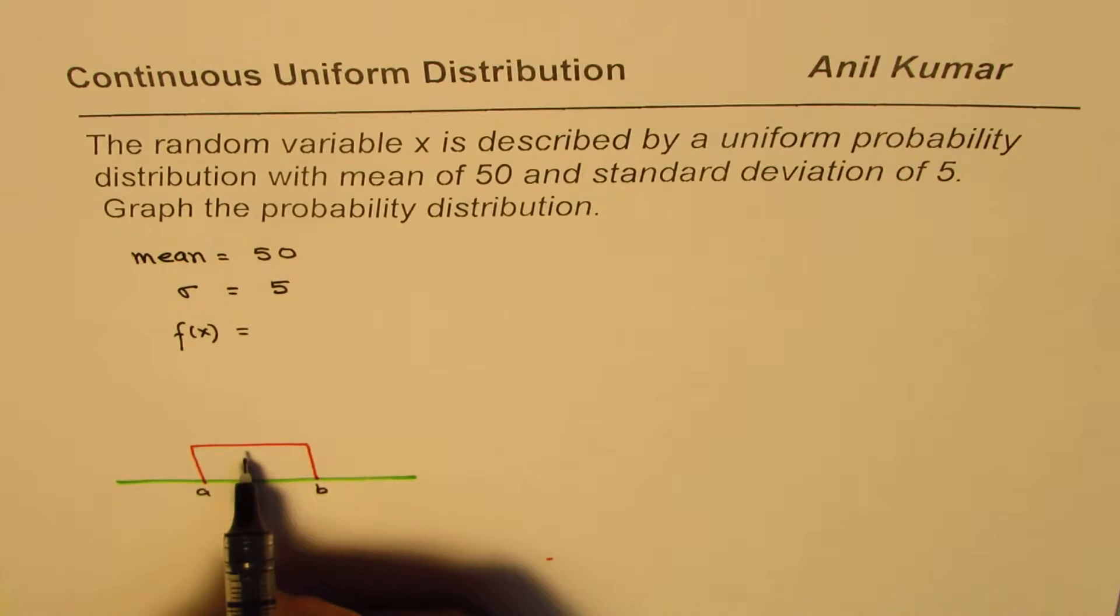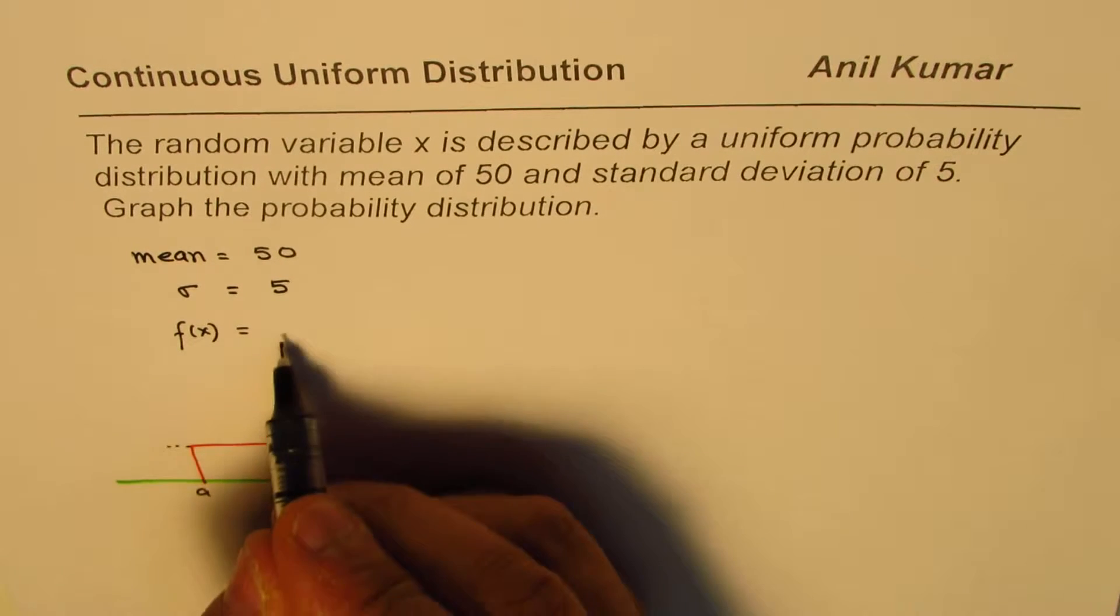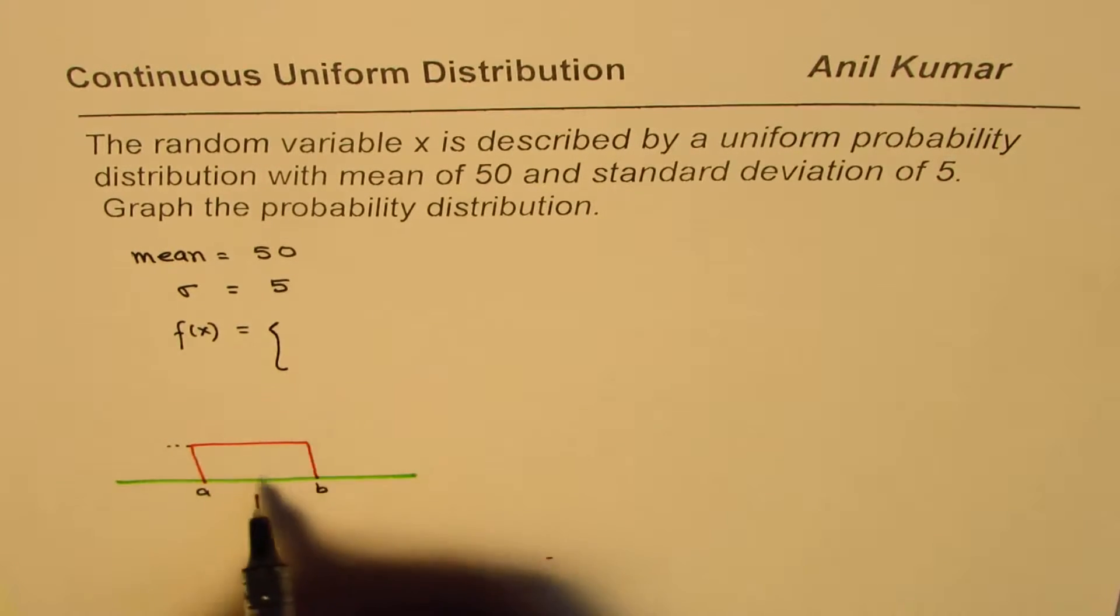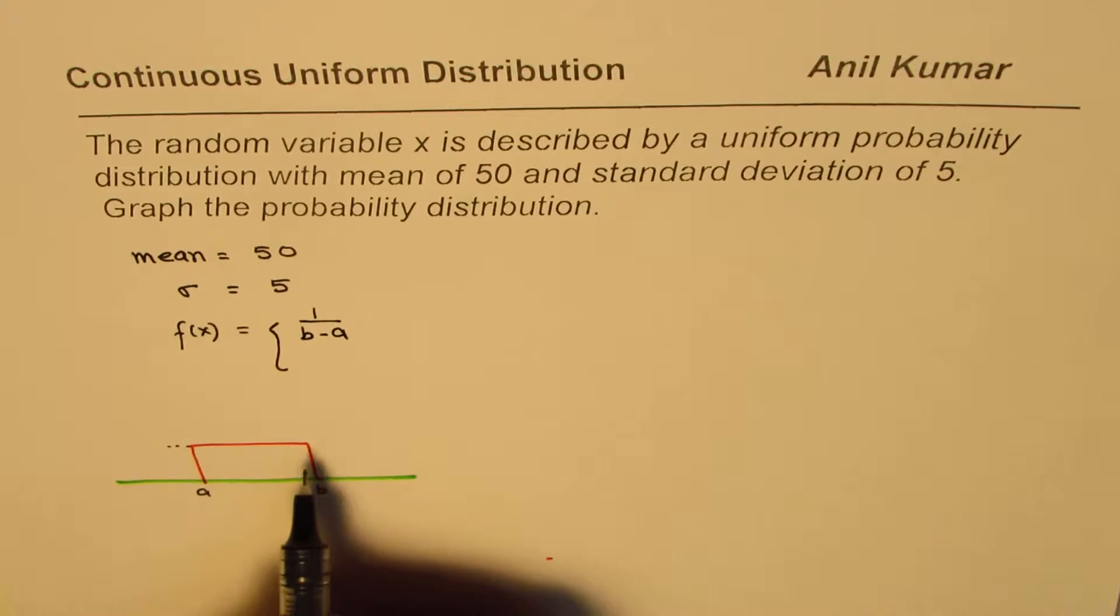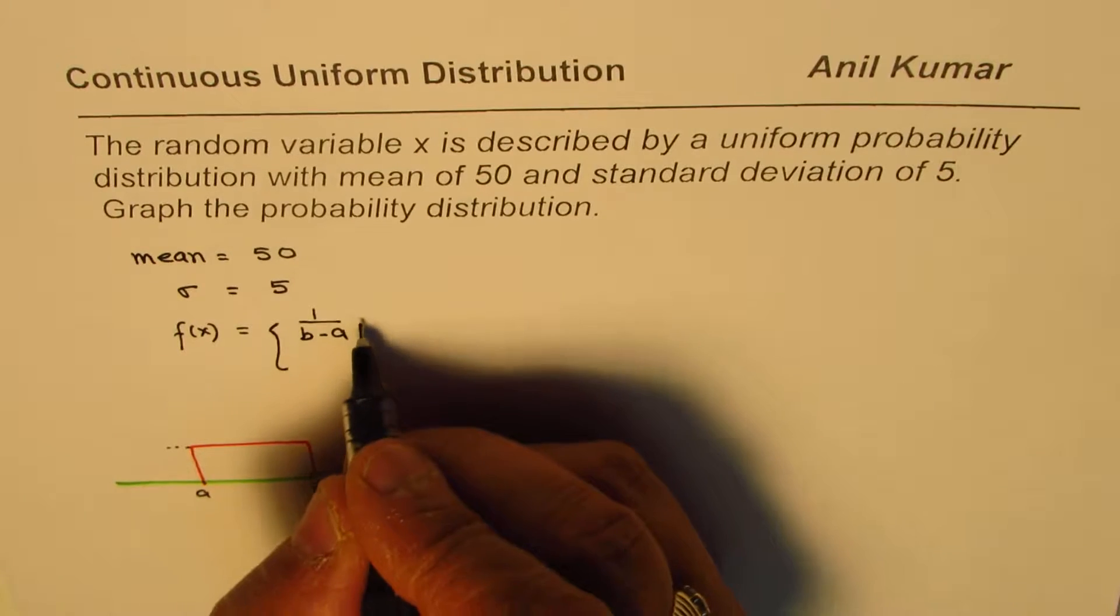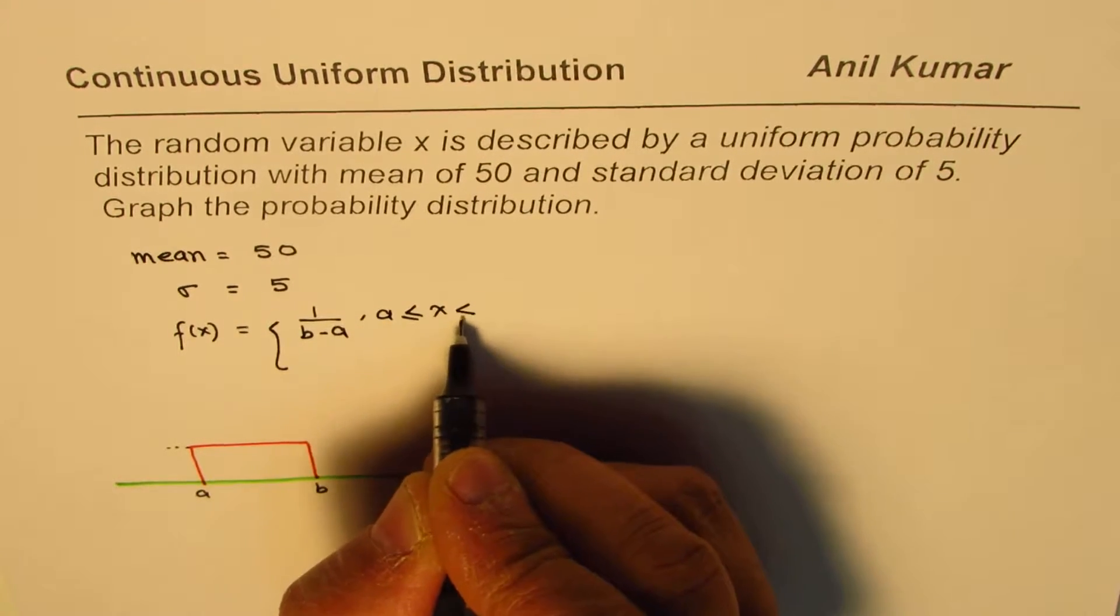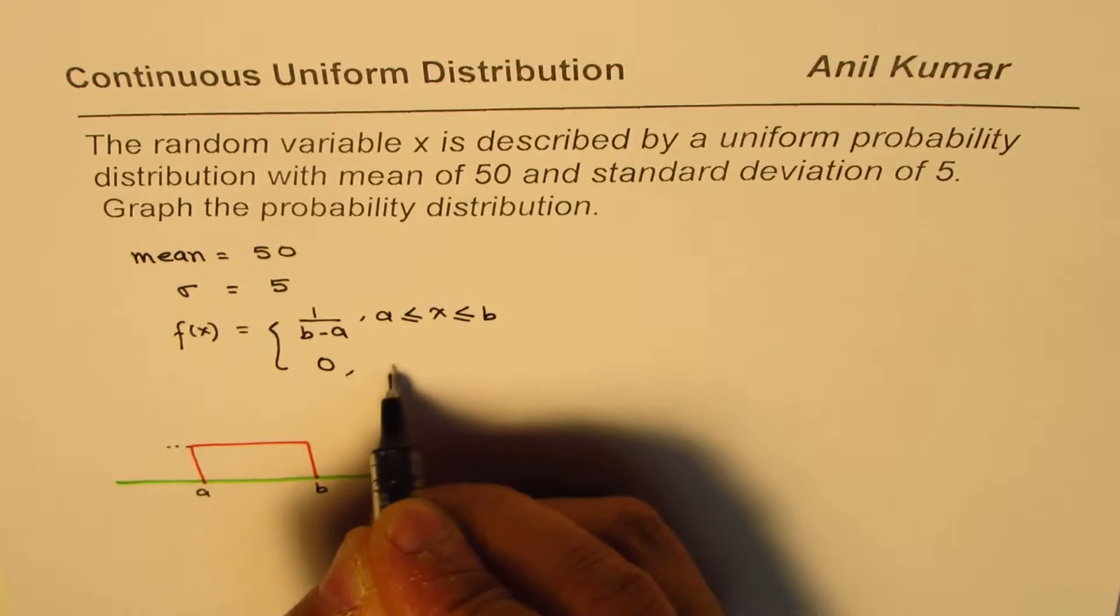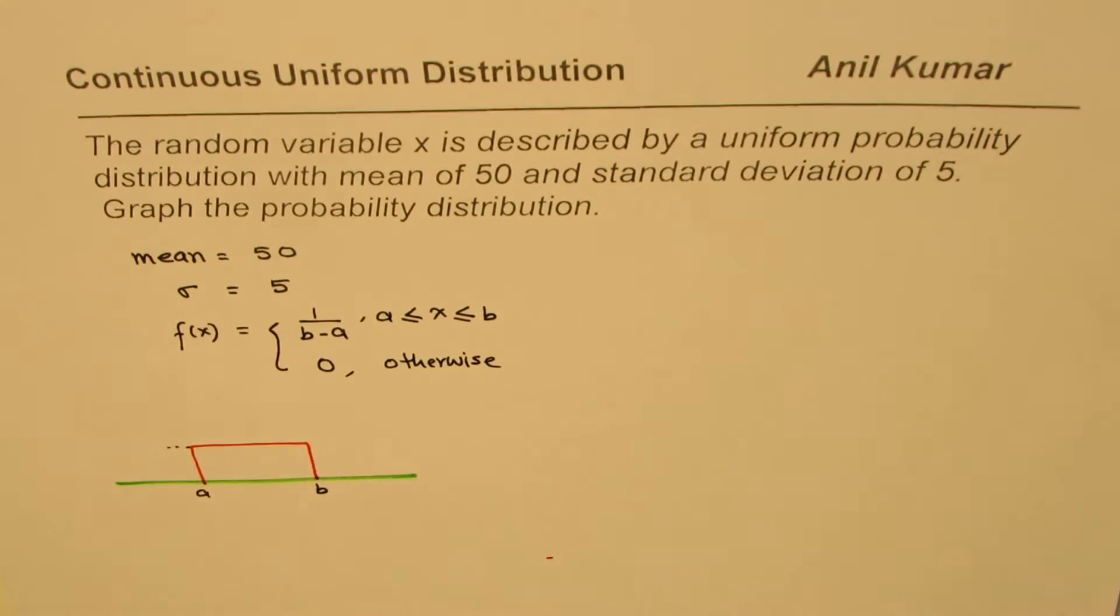Now, this probability is such that the area is 1. So basically, this value of f of x equals always 1 over b minus a. So when you multiply 1 over b minus a with b minus a, you will get 1. So this is when x is between a and b, and this is equal to 0 otherwise.